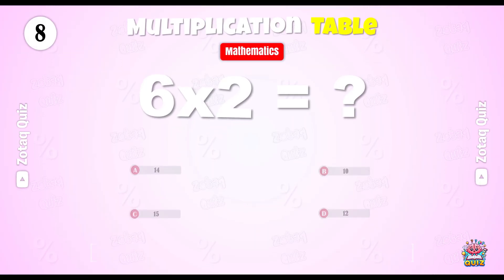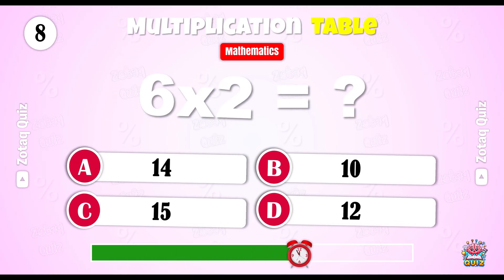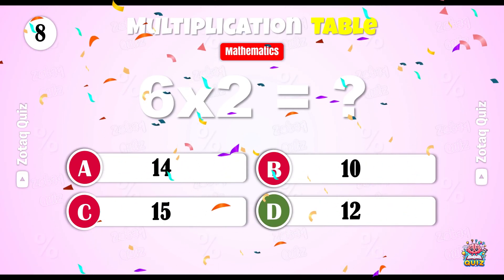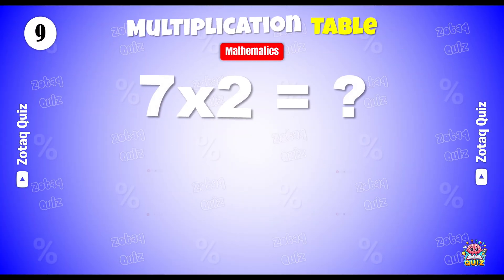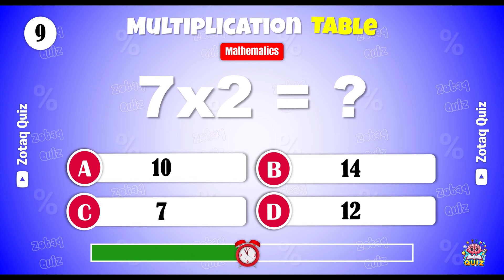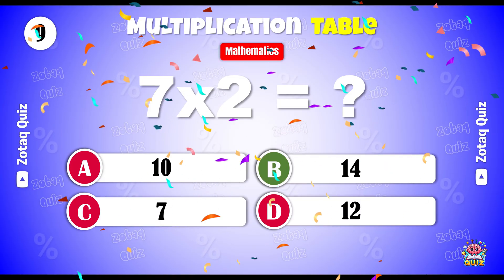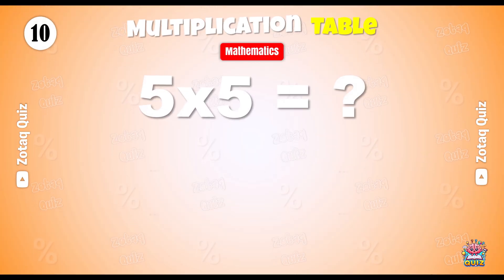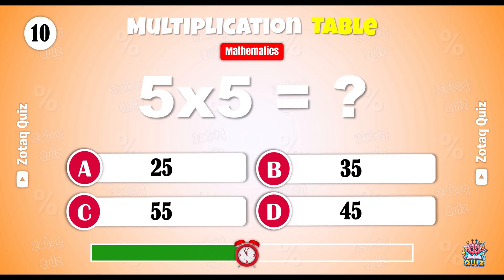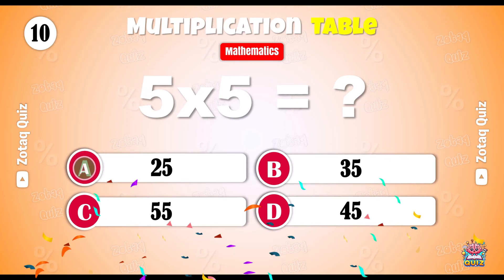What is 6 x 2? And the right answer is 12. What is 7 x 2? And the right answer is 14. 5 x 5 is equal to — and the right answer is 25.